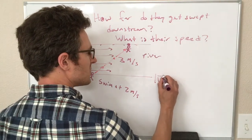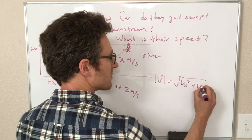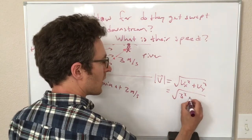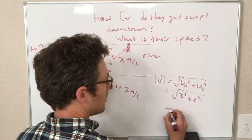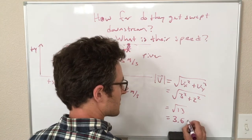the magnitude of their velocity, the speed, is equal to the square root of vx squared plus vy squared, so that is the square root of 3 squared plus 2 squared, so that's the square root of 13, which is about 3.6.